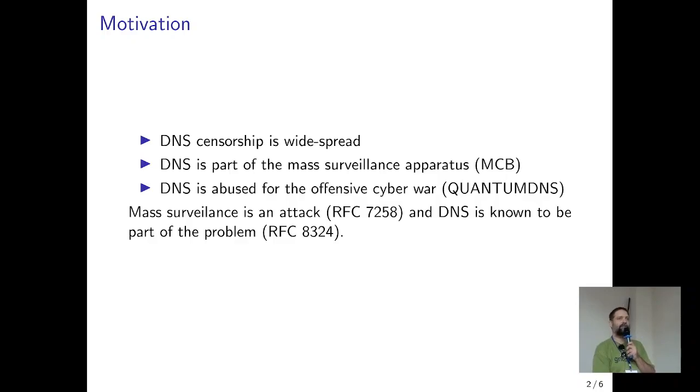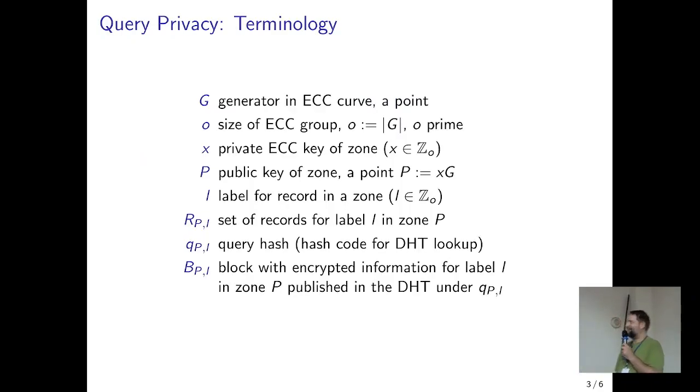So now that I've given you this introduction, I will talk about the cryptography. Let's assume we have G, which is a generator on an elliptic curve, a point. We have the size of the group, small o, that's a prime number usually. We have a private key x, which we're using to attest authority or control over a name in a domain. So if you control example.com, you would have to have the corresponding private key. P would be the corresponding public key of that domain. When you do name resolution, you have some kind of labels, be it example.com, gov.tw, whatever. That's the label l, which we will represent as a number, modulo o.